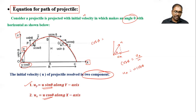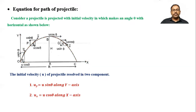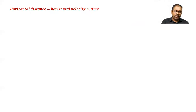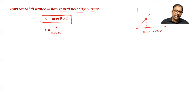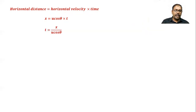Similarly, the component along the y-axis is u sin theta, and along the x-axis it is u cos theta, also written as u_y and u_x respectively. The horizontal distance covered by the projectile in time t equals horizontal velocity into time: x equals u cos theta multiplied by t, so t equals x divided by u cos theta.